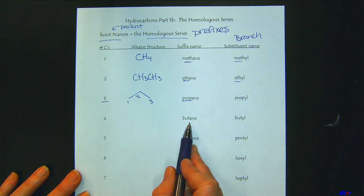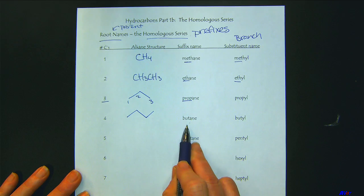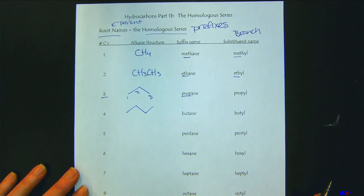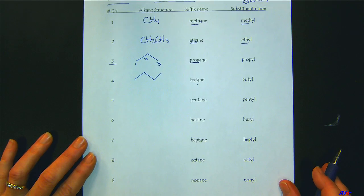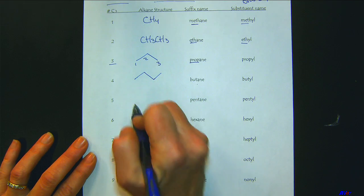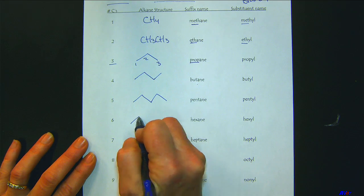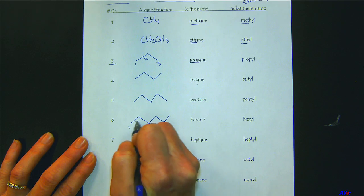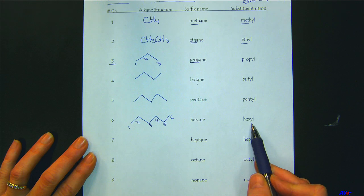Moving along the series: butane would be four carbons. Now we're going to see where we overlap with those Greek prefixes we learned before. Pentane will be five carbons, hexane will be six, and if it's a branch, we use the '-yl' ending.